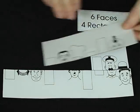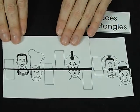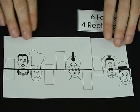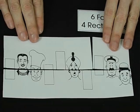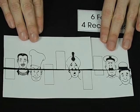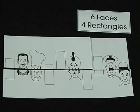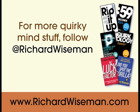Now there are one, two, three, four, five faces and one, two, three, four, five rectangles. So the question is: where's the missing face?